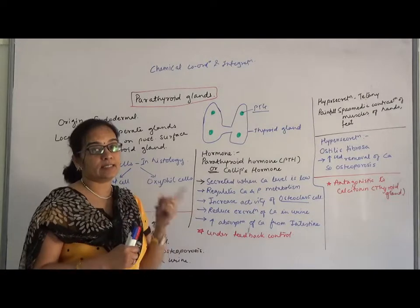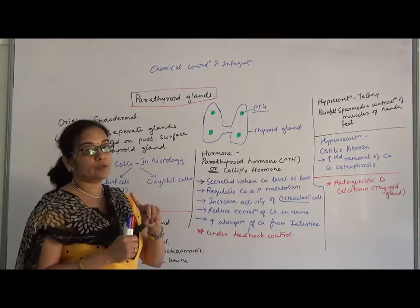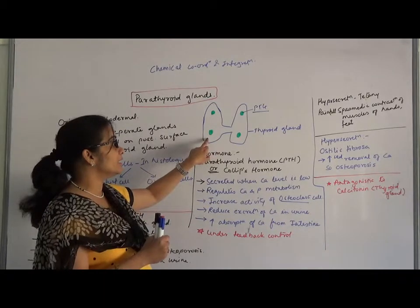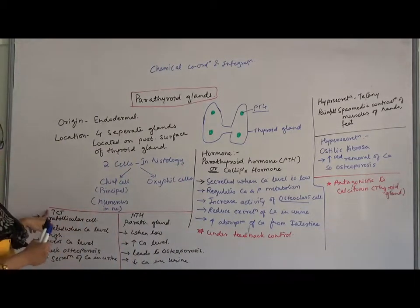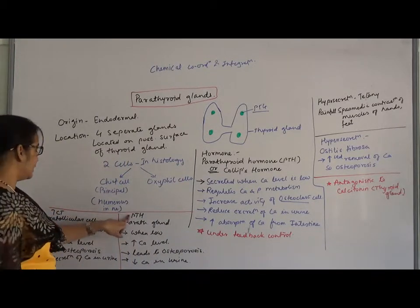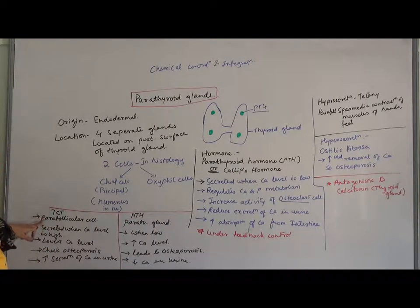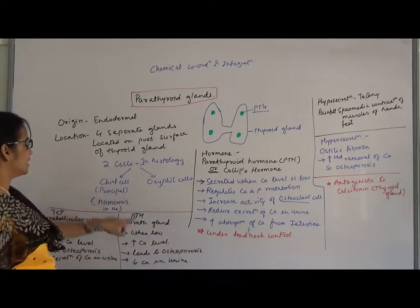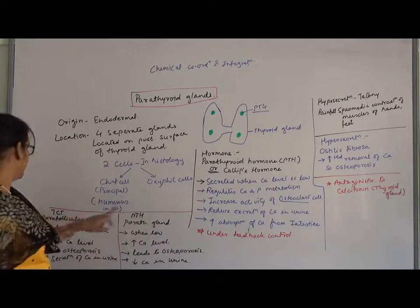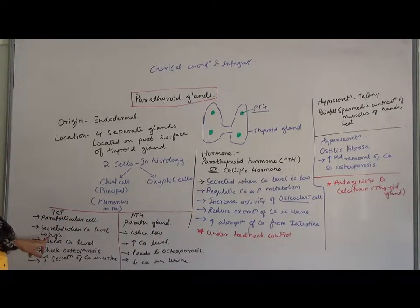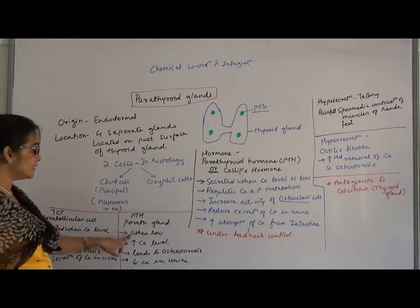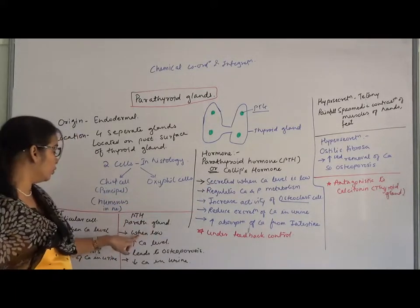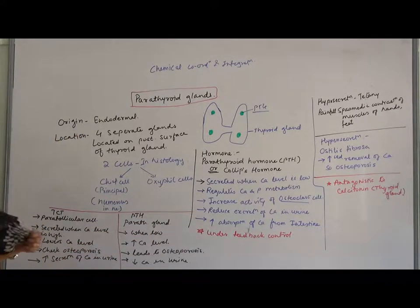This particular hormone is exactly antagonistic to calcitonin. Calcitonin, if you remember, is released from the parafollicular cells of the thyroid gland. The chief cells of the parathyroid gland release parathyroid hormone. Calcitonin is secreted when the calcium level in the blood is high — to maintain it, TCT is released. PTH is secreted when the calcium level in the blood is very low.